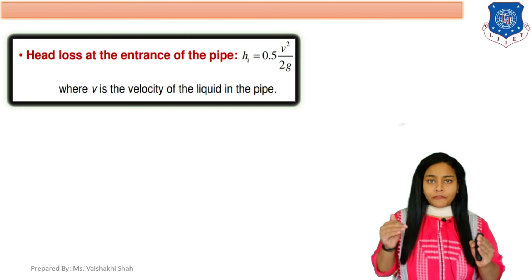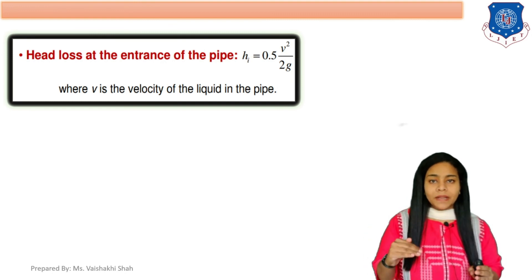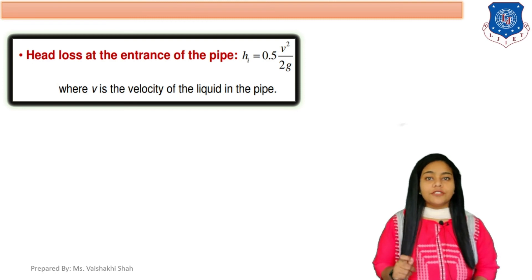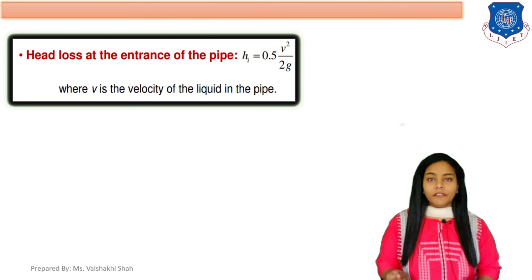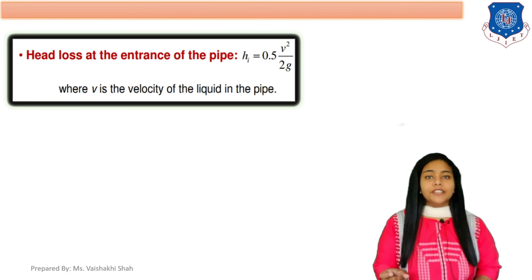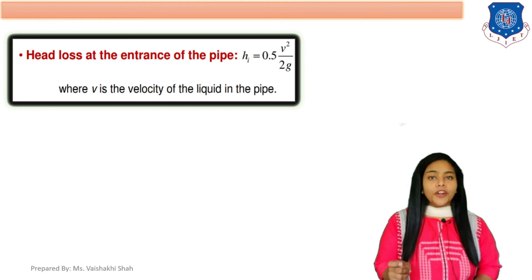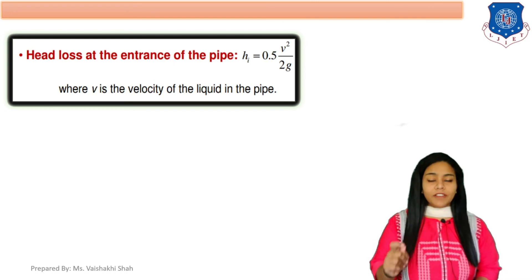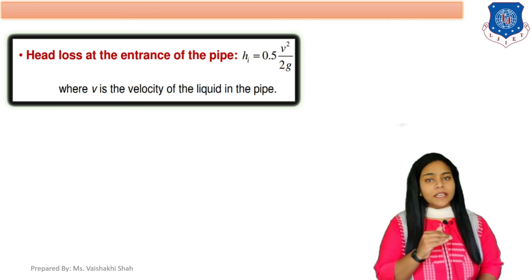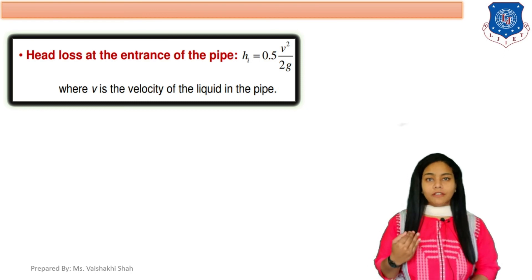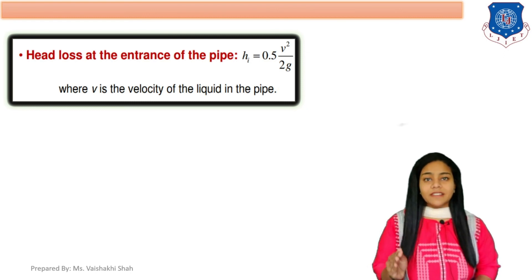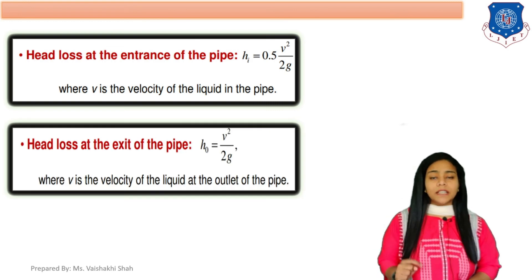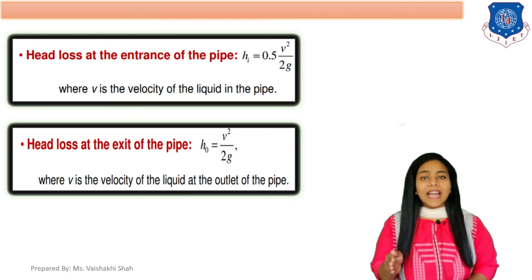When the fluid enters a pipe there is some amount of head loss, indicated as hi — head loss due to entrance of the pipe. The equation for head loss at entrance is 0.5 V² / 2g, where V is the velocity of liquid flowing in the pipe. Remember this equation: head loss at entrance = 0.5 V² / 2g.